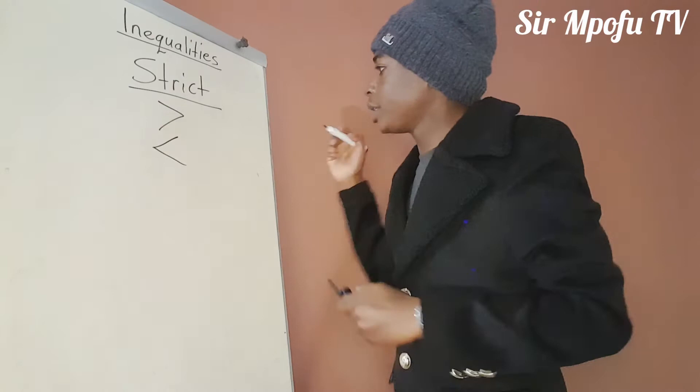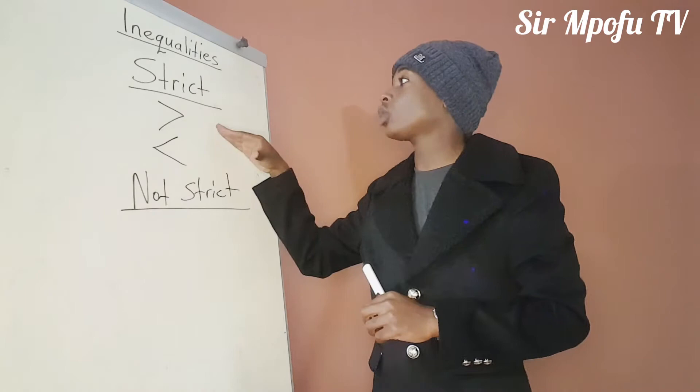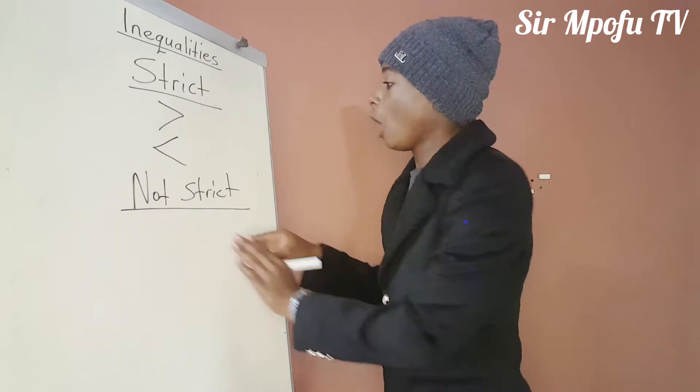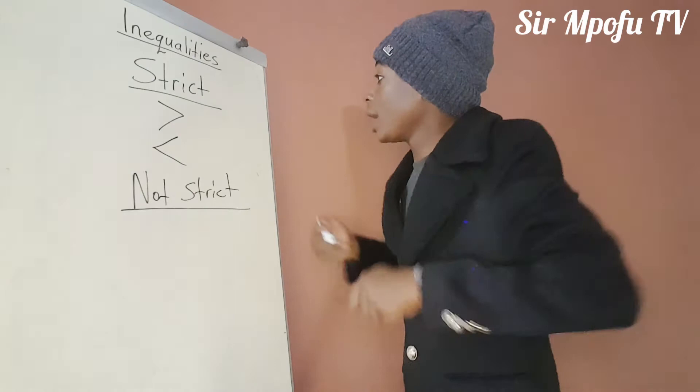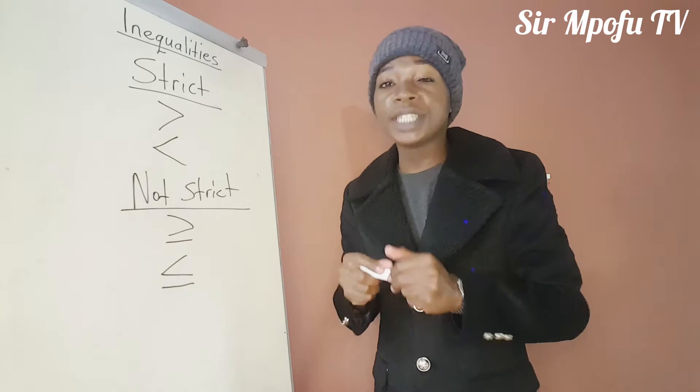Let us look at a not strict inequality now. What do we mean when we are saying a not strict inequality? Not strict inequality is the exact opposite of a strict inequality. I told you that on a strict inequality there is no possibility of equality. Now, on a not strict inequality, there is a possibility of equality. For instance, you can have the greater than or equal to sign, or less than or equal to. There will be an equal sign below — that tells you this is a not strict inequality.